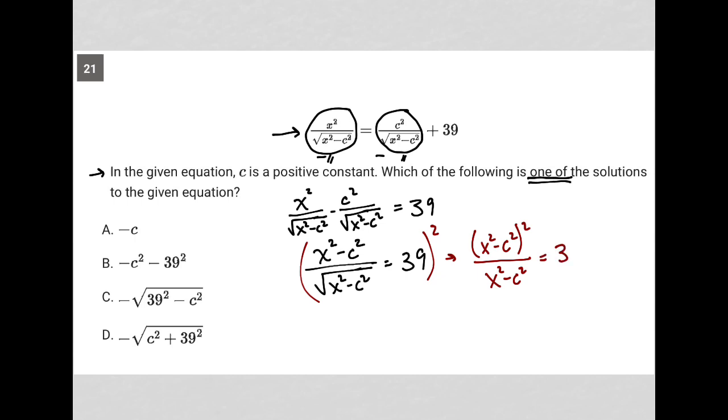And then this, of course, equals 39 squared. Now, what I like about that process and that step is I can now just cancel out one of these x squared minus c squared. So I just cross that two out with my entire denominator, right?